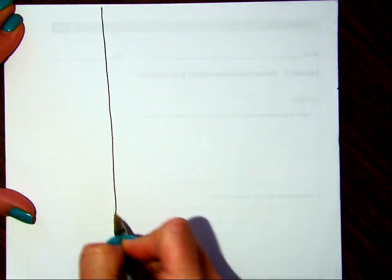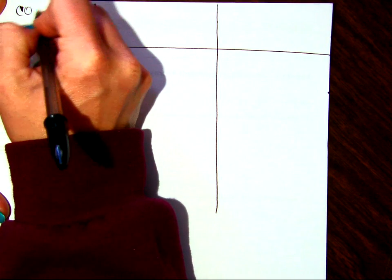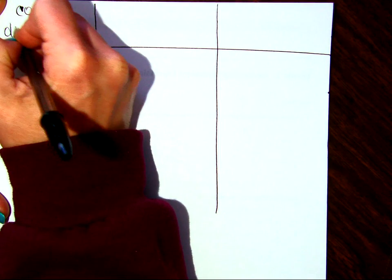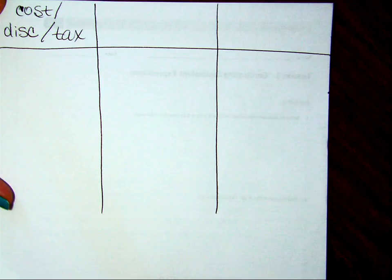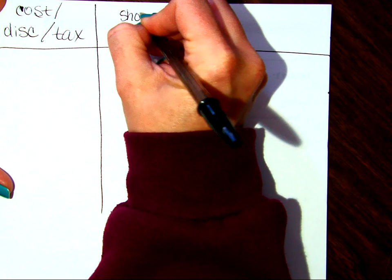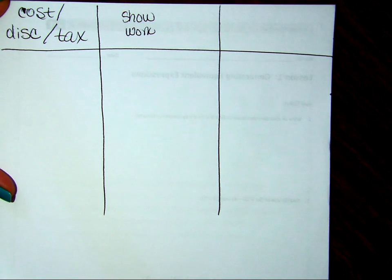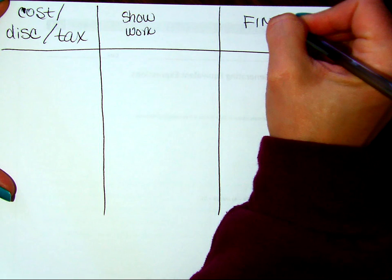Alright, so let's make another column. This chart is going to give you the cost of the item, the discounted price — or the discount, not the price — and the tax of the item. Now, this little column right here, I'm going to have you show your work on, and this is going to be your final price.